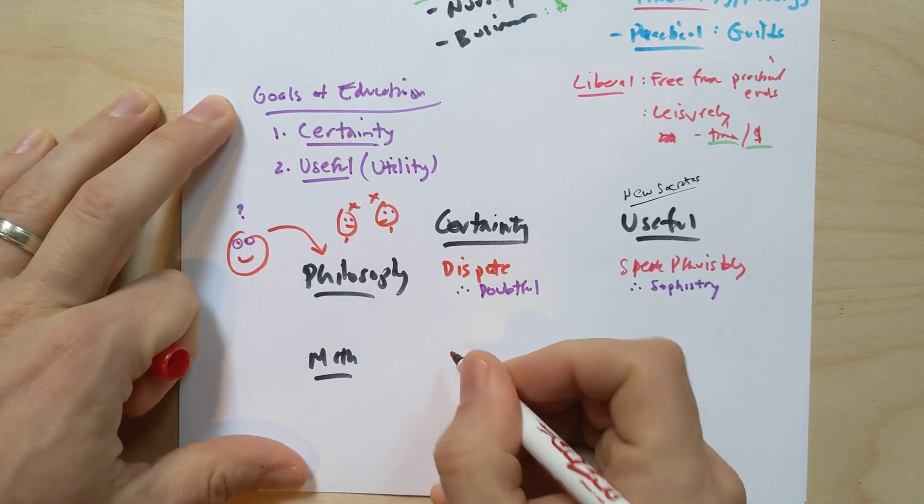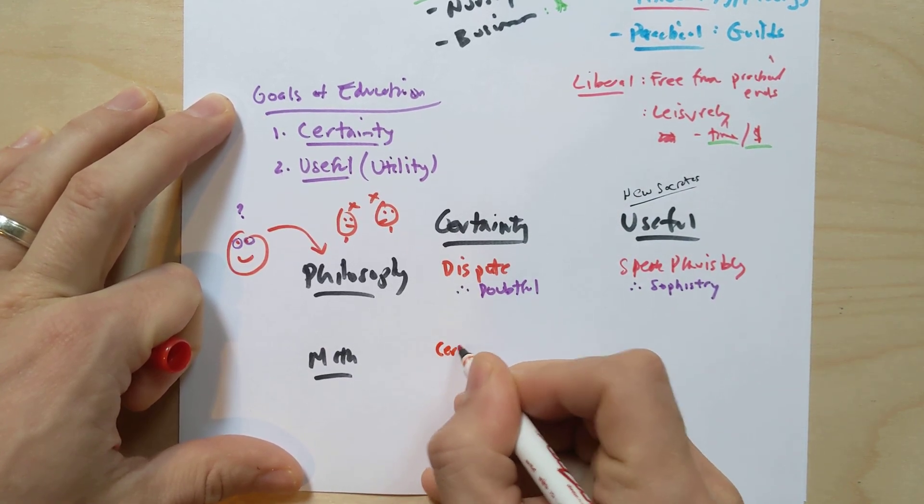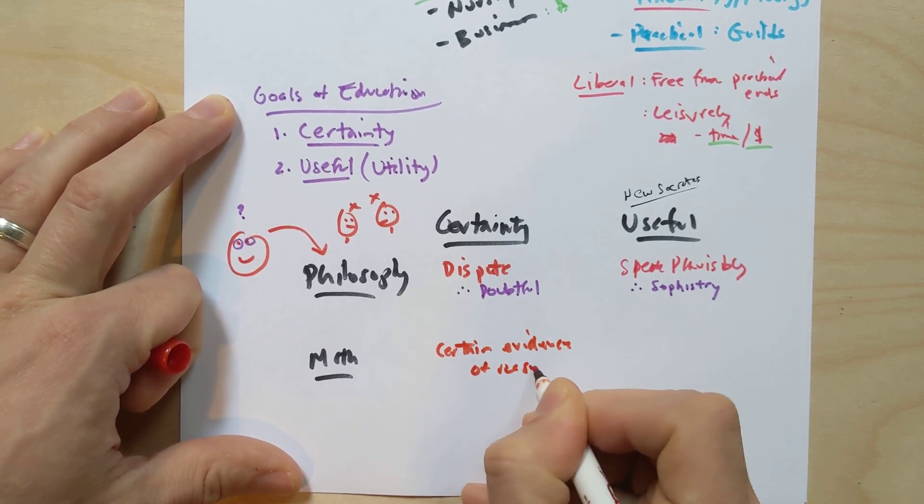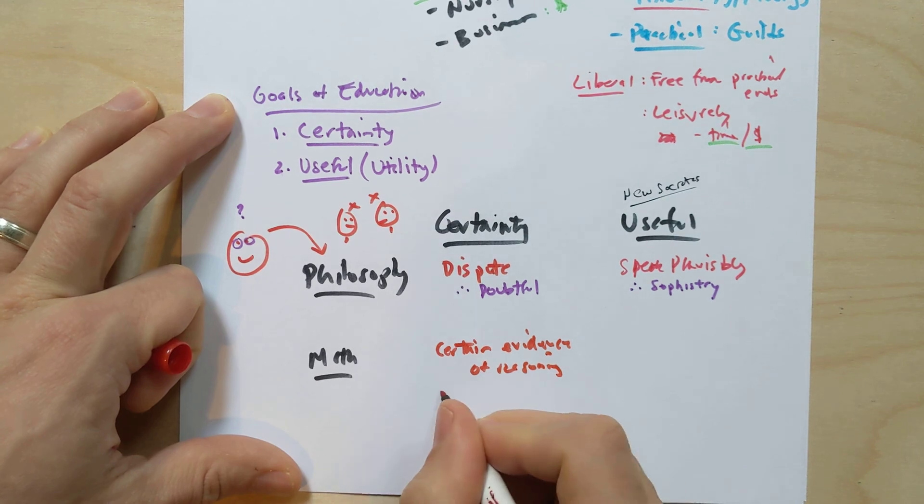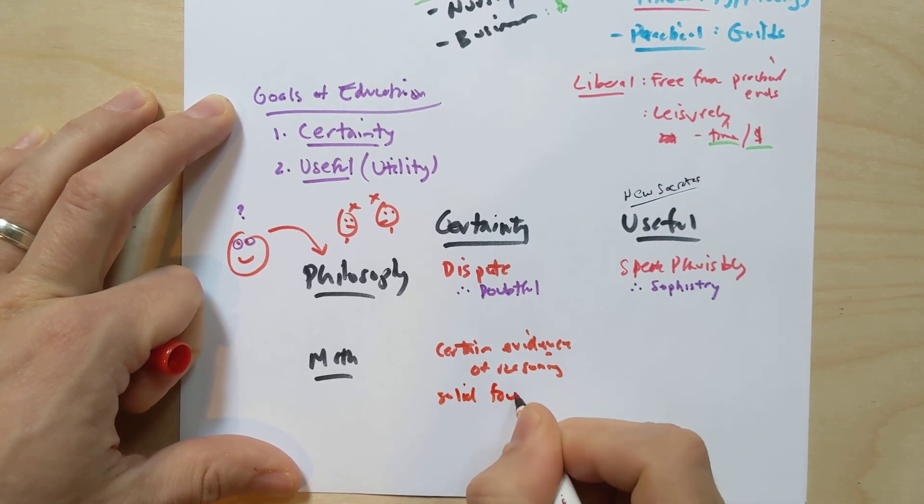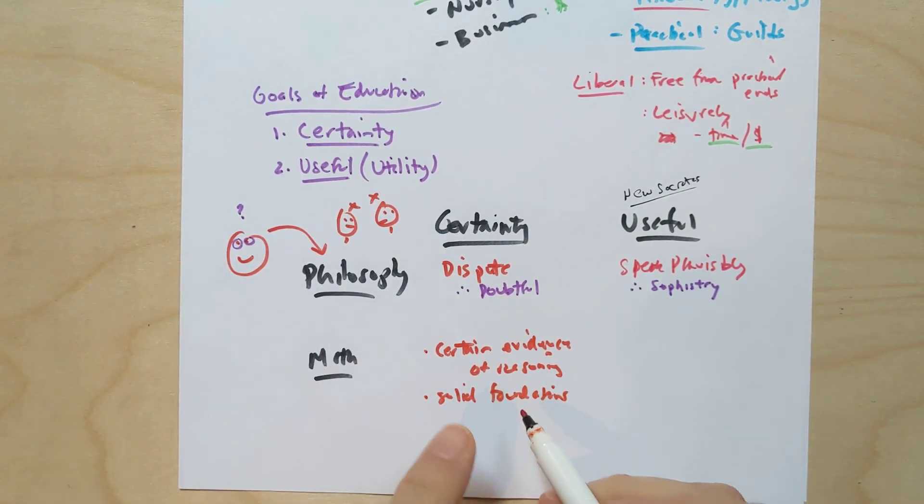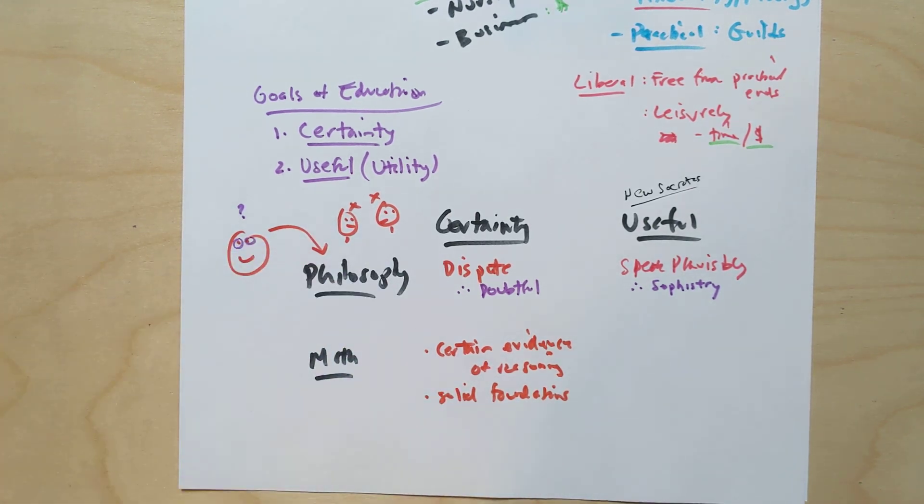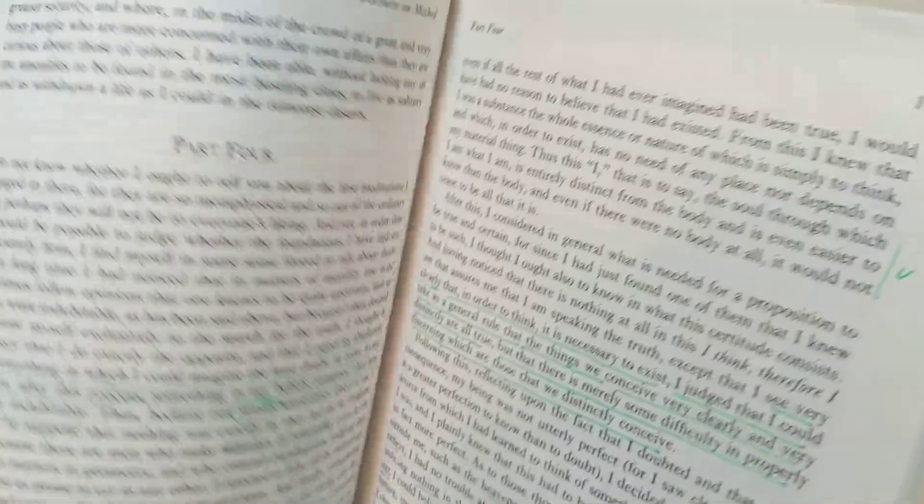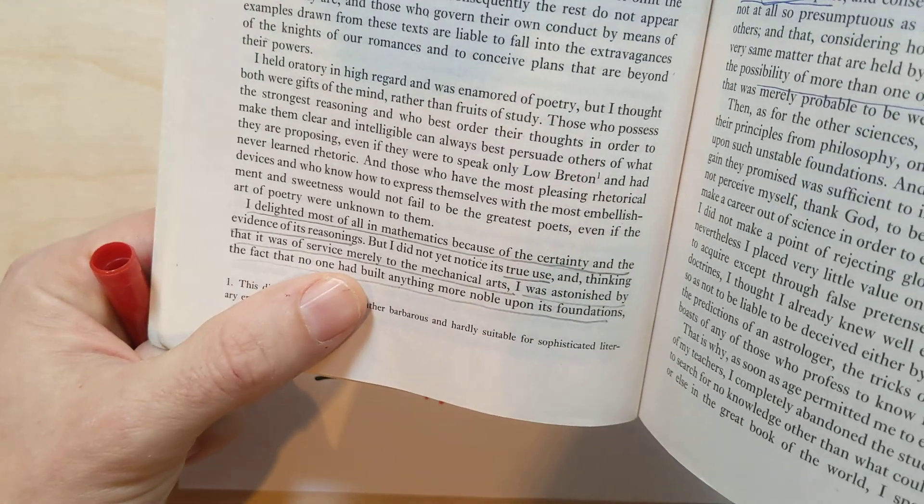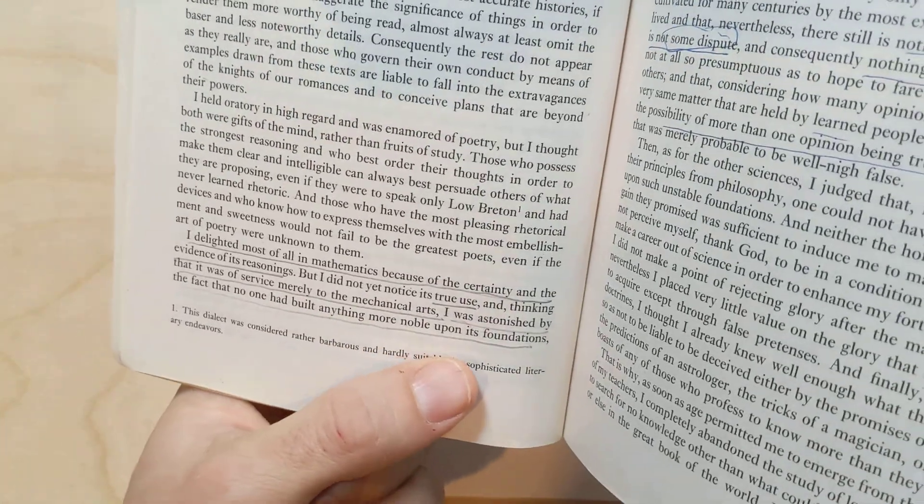In terms of mathematics certainty, he said he talked about the sort of the certain evidence of its reasonings, the evidence of the reasoning itself, evidence of reasoning. And he talked about the kind of solid foundations of that reasoning. And we're going to, again, we'll have a follow-up video where we talk about, we're going to do some math and think about math. We're going to try to understand why he saw, what does he mean by talking about the evidence of the reasoning and the solid foundations of mathematics.